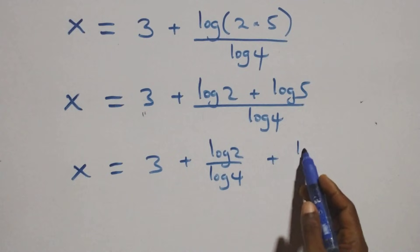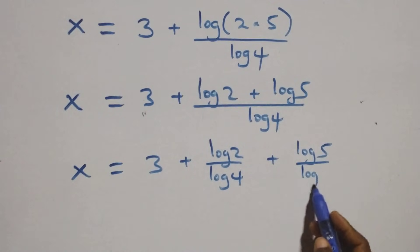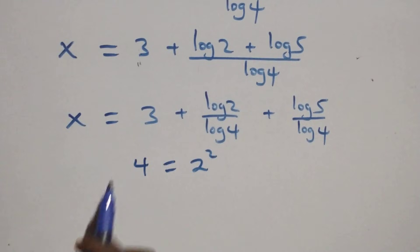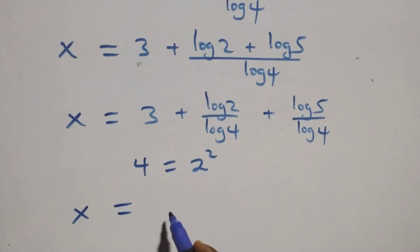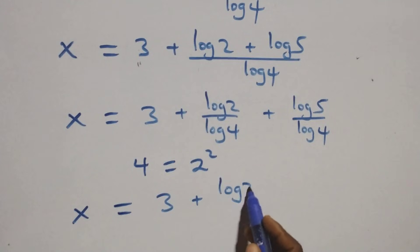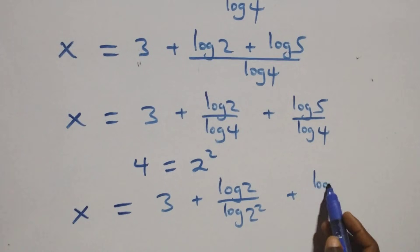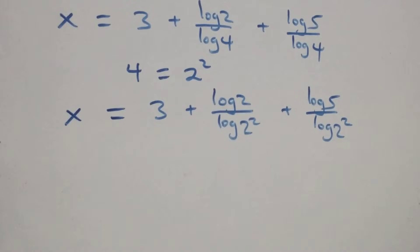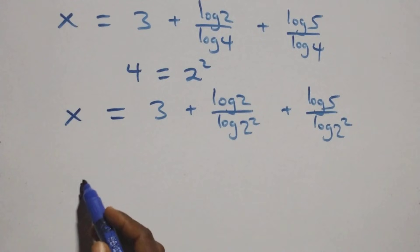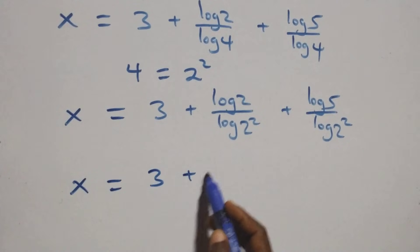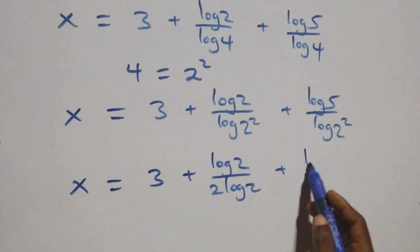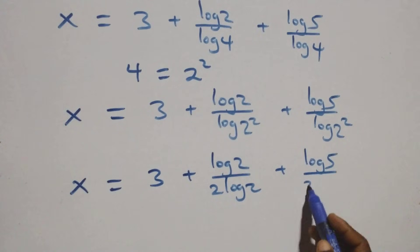Now 4 can be expressed as 2 times 2, which is 2 squared. So x equals 3 plus log 2 over log(2 squared) plus log 5 over log(2 squared). Applying the power rule of logarithms, the 2 comes down, giving x equals 3 plus log 2 over 2 log 2 plus log 5 over 2 log 2.